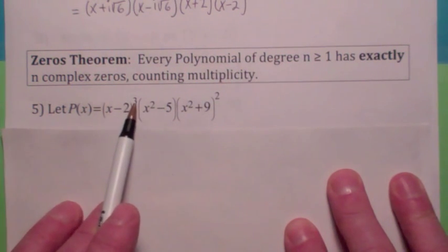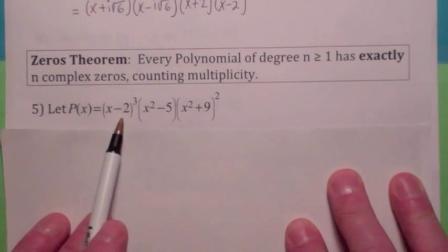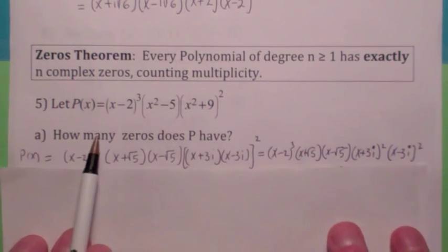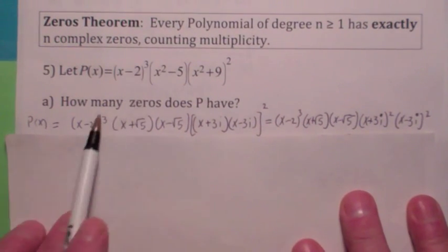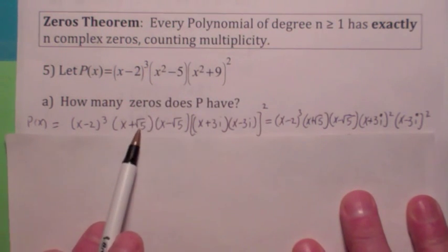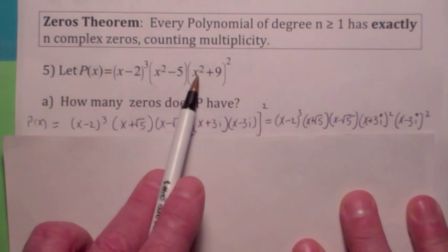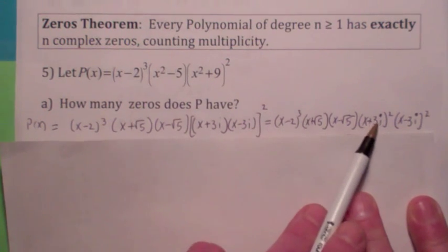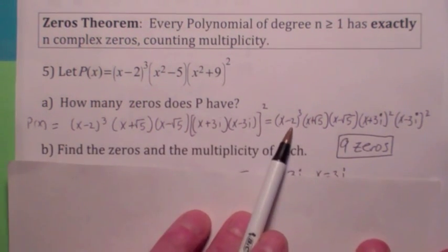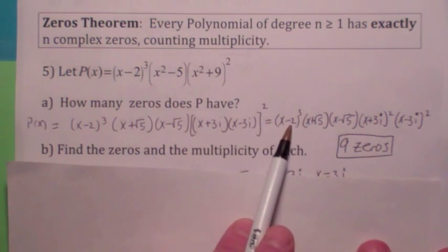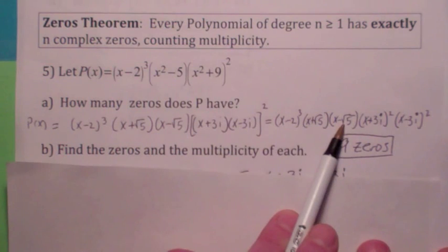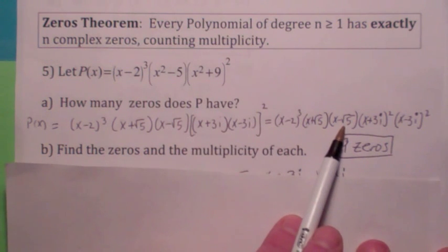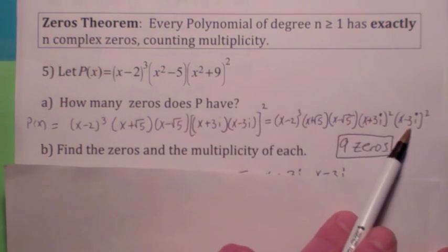Look at this example. The zero at x equal 2, since it has multiplicity 3, this is going to count as 3 zeros. So how many zeros does this polynomial function have? This is going to be x minus 2 to the third — this counts as 3. This factors into x plus square root of 5 times x minus square root of 5. And let's factor x squared plus 9 as x plus 3i times x minus 3i, so when you square it, you can square each of those factors. So: 2 counts as 3, negative square root of 5 counts as 1, square root of 5 counts as 1, minus 3i counts as 2, and 3i counts as 2. That adds up to 9.